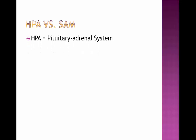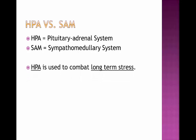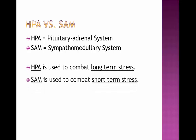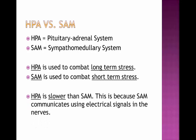HPA versus SAM. HPA is another way to refer to the pituitary adrenal system, and SAM is another way to name the sympathomedullary system. HPA is used to combat long-term stress, however SAM is used to combat short-term stress. The pituitary adrenal system is slower than SAM because the sympathomedullary system communicates using electrical signals in the nerves, which travel much faster than anything else in the body.